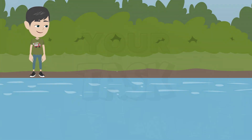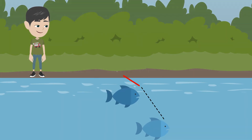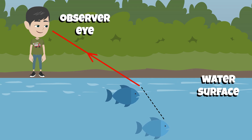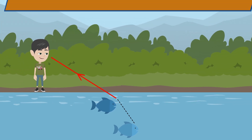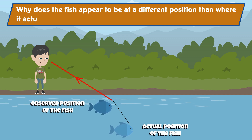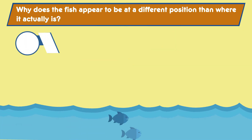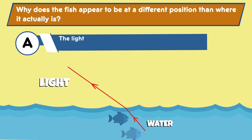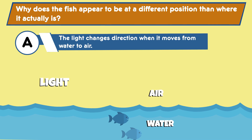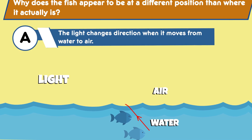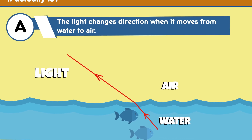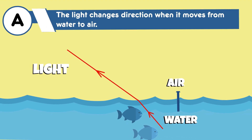Here's your task: observe the diagram and think about how the light traveling from the fish to the observer's eye is affected by the water surface. Here's your question for Part A: why does the fish appear to be at a different position than where it actually is? Go ahead and select two correct answers. Answer choice A: the light changes direction when it moves from water to air. Quick tip — think about the effect of refraction on light direction. Does light change direction when it moves from one medium to another, such as from water to air?